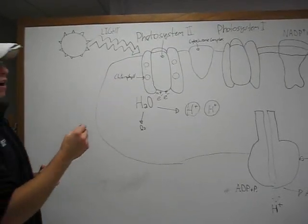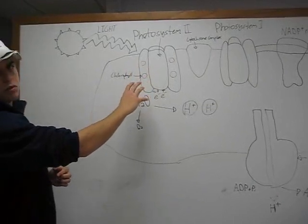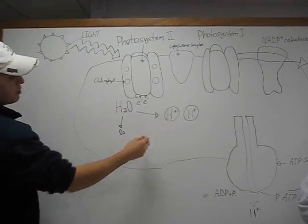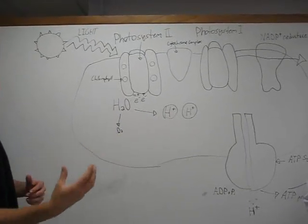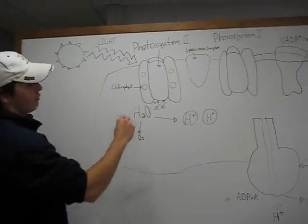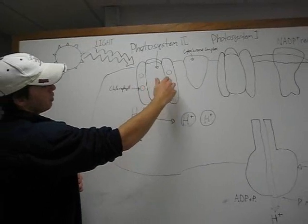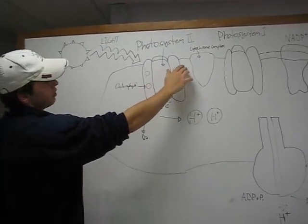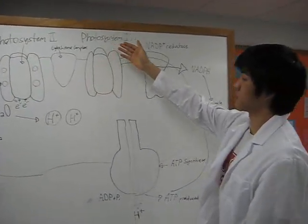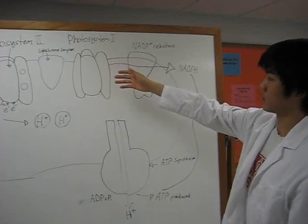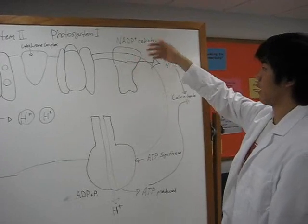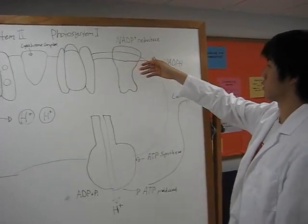After this, electrons are transferred through an electron transport chain to the cytochrome complex. From there, the electrons are accepted by photosystem I and then transported by the electron transport chain to the NADP reductase. From there, it combines with NADP to yield NADPH.